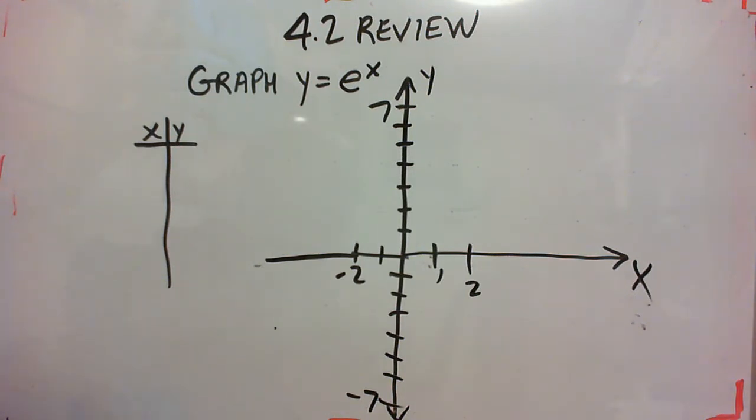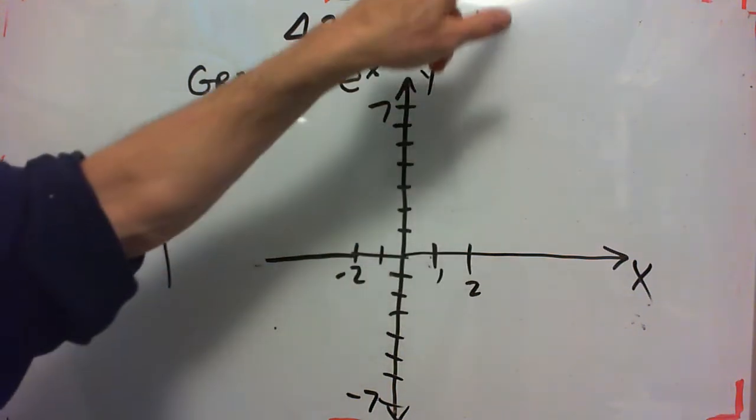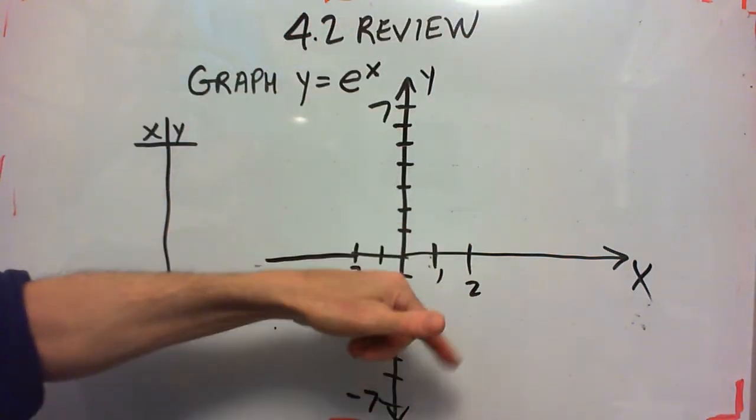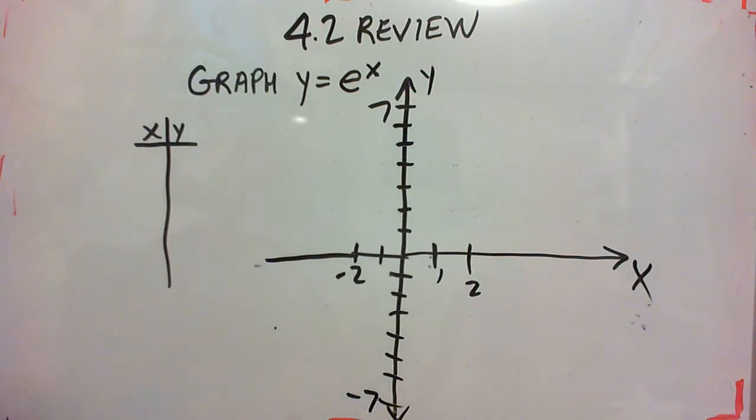As you read the notes for section 4.2 on exponential functions, exponential functions have this L shape - the L goes up or maybe it goes down, or maybe it's reversed. But we're going to start with e to the x, and exponential functions are easy to graph.